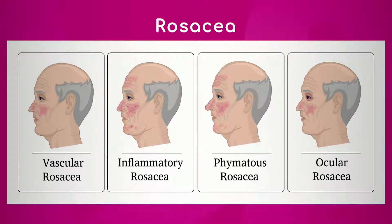Second, you have inflammatory rosacea, what we call papulopustular rosacea, where besides the redness and the flushing and the vessels, patients are also developing an acne-like eruption with the inflammatory papules and the pustules.